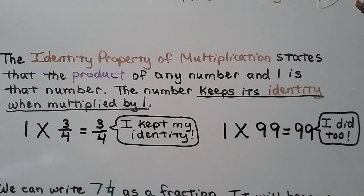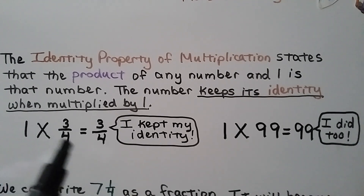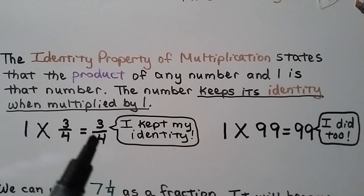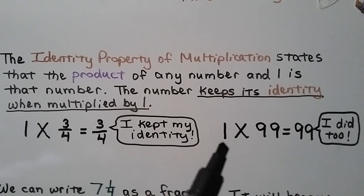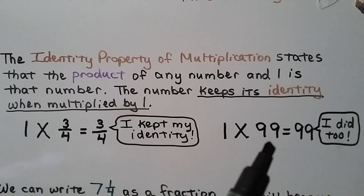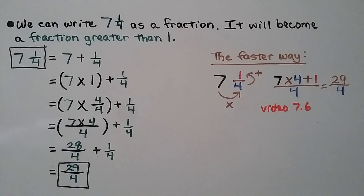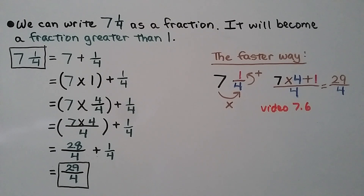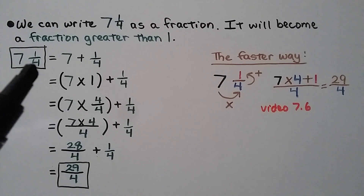The identity property of multiplication states that the product of any number and 1 is that number. The number keeps its identity when multiplied by 1. We have 1 times 3 fourths — it keeps its identity and stays 3 fourths. It doesn't matter how large the number is or if it's a fraction or decimal. We have 1 times 99 — it's going to equal 99. So we can write 7 and 1 fourth as a fraction. It will become a fraction greater than 1.